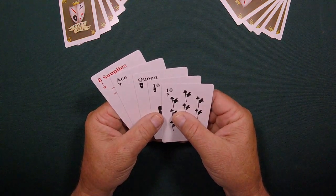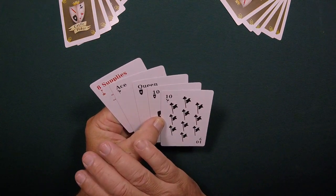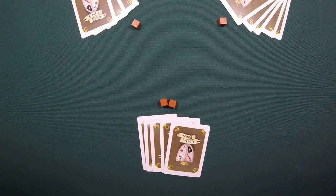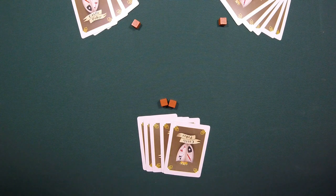Then, once again starting to the left of the dealer, each player may bid stones based on how strong they think their hand is. Stones are the currency in this game. It's what you build a castle out of. Once all bids are made,